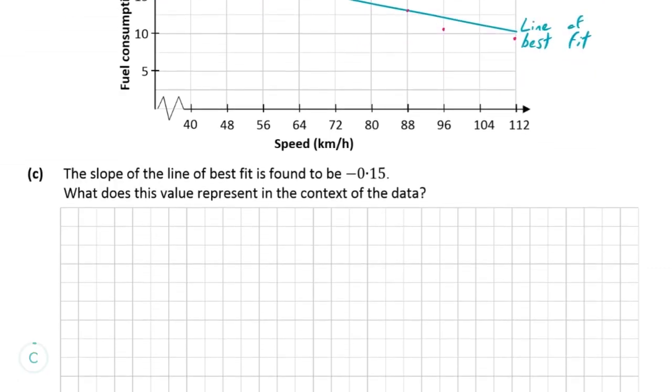In part C, they tell us that the slope of this line is minus 0.15. And we're asked what this value represents in the context of the data. So what they're looking for here is you to just say in words, basically why the slope being minus 0.15 is important or what it means.